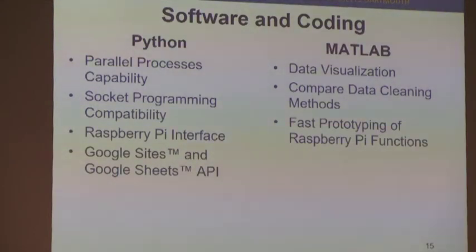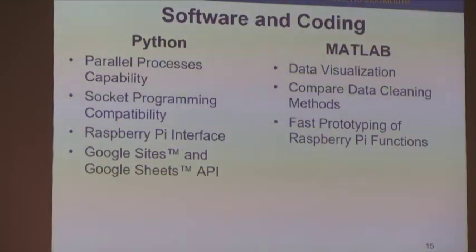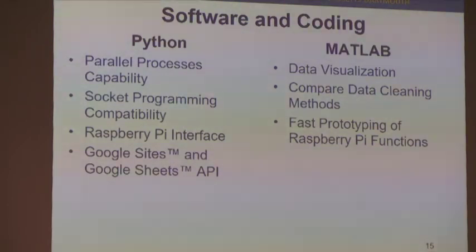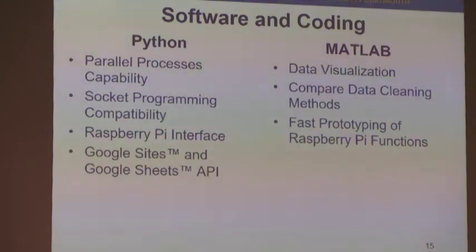For the code, we use Python and MATLAB. We chose Python because it has easy parallel processing capabilities — we need to be controlling our pump routines for heart rate, collecting sensor data, communicating over the network with socket programming, and talking to the Google Sites API all at the same time. For MATLAB, we chose it because it can easily visualize the data. Once we get data back from Google Sheets, we upload it to MATLAB and visualize it as a graph. MATLAB has built-in data cleaning functions, and also has the capability to run one-line commands to individually access the pins on the Raspberry Pi for fast prototyping.